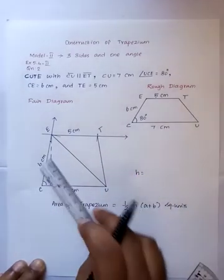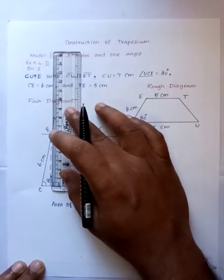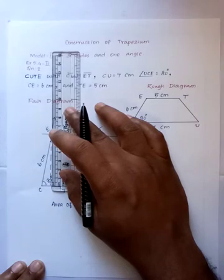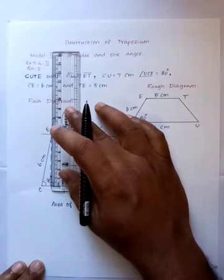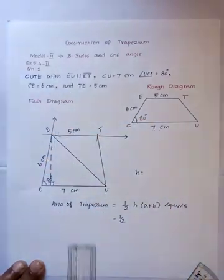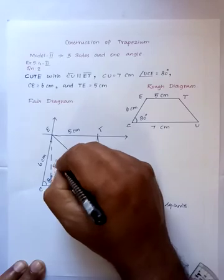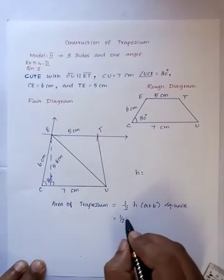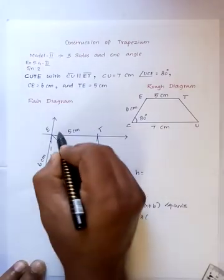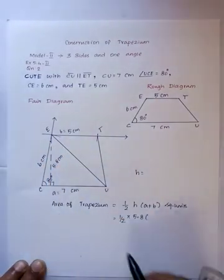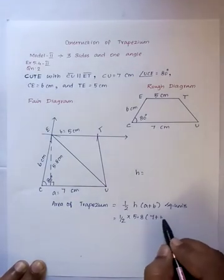Trapezium's height: what is the height of trapezium? We measure the height. We measure exactly 5.8 cm. So half into 5.8 into parallel sides. A is the parallel side, B is the parallel. So A equal to 7 cm plus B equal to 5 cm.